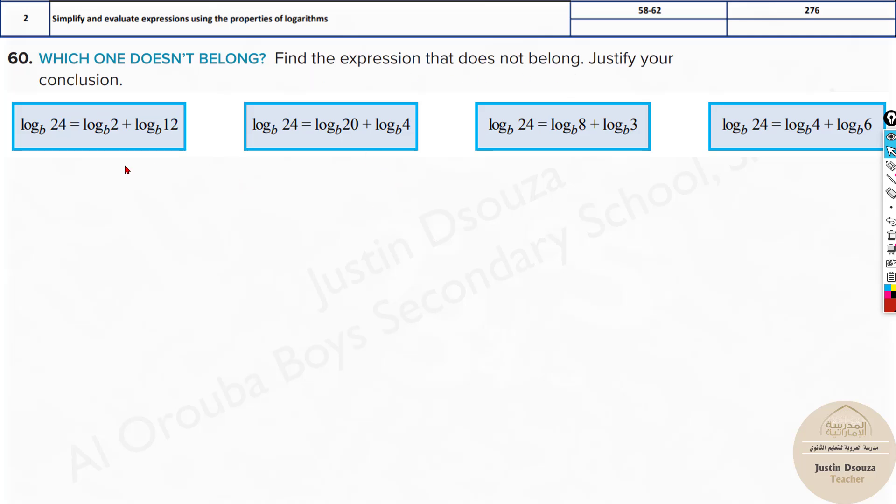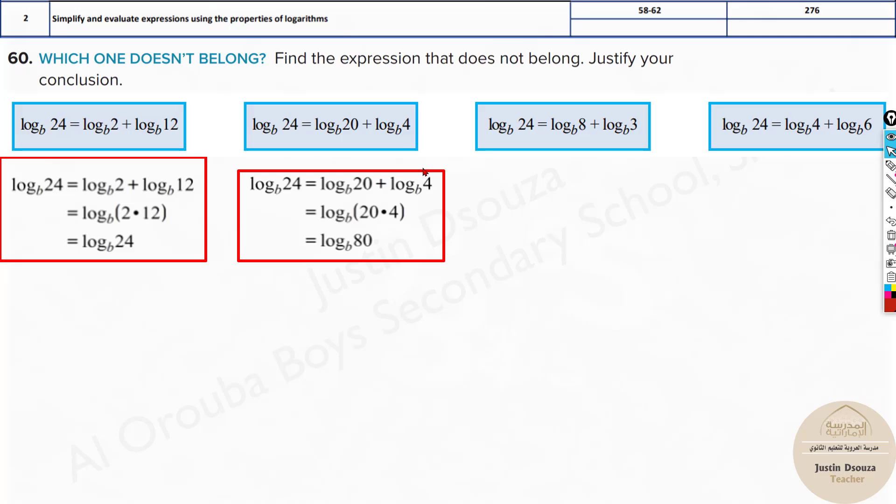We have an interesting problem - which expression doesn't belong to this group? Look at the questions. We have log base b 24 equals 2 times 12. Yes, this is correct because when it's plus, you don't add these terms, you multiply them. 12 times 4 is correct. What about this? It's 20 plus 4. Really, you should multiply. 20 times 4 is 80. This is wrong. 8 times 3 is correct, 4 times 6 is 24. Options 1, 3, and 4 are proper, but this is wrong.